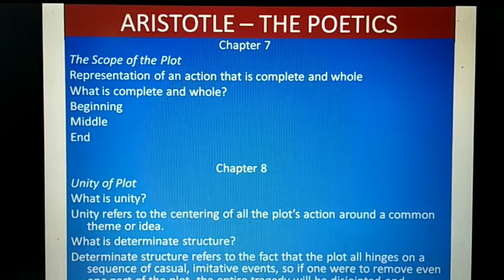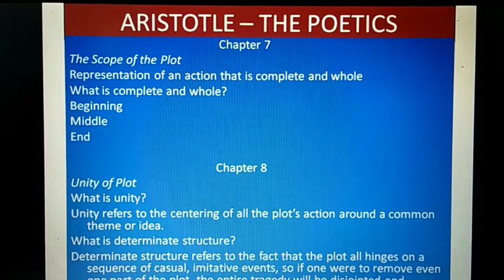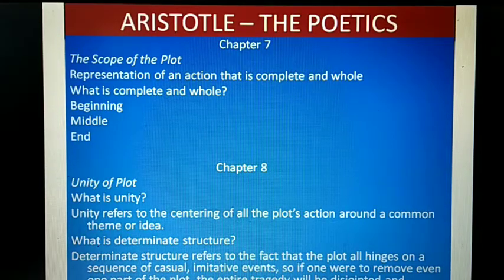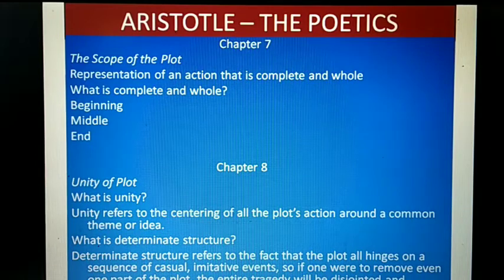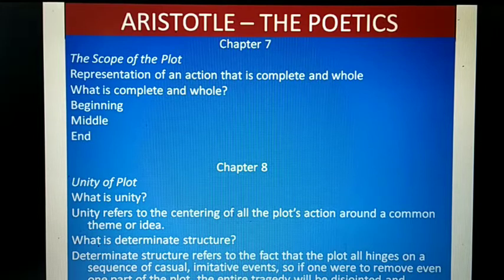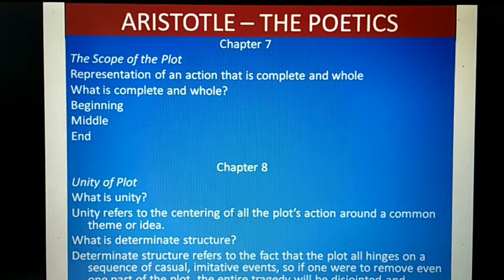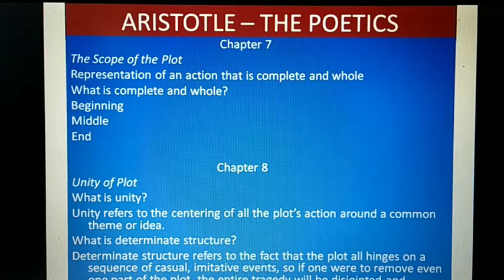Aristotle goes on to describe the elements of plot in chapter 7. The elements of plot are: number one, completeness; number two, magnitude; number three, unity; number four, determinate structure; and number five, universality. We have to understand what all these five elements are in detail.